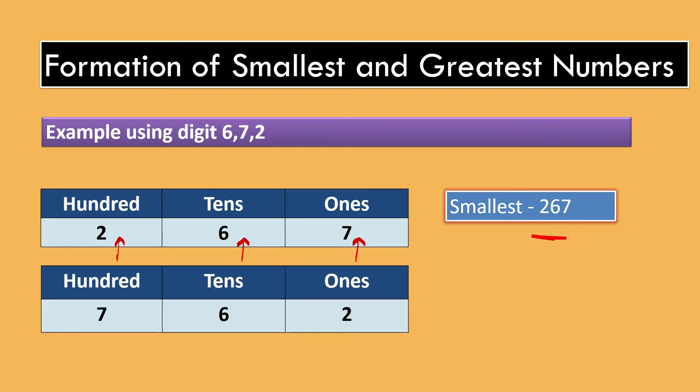Greatest number is formed by placing the given digits in descending order. So, we will place 7 at 100s, 6 at 10s, 2 at 1s. Greatest number formed here is 762.